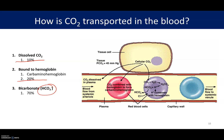Now here in this diagram we have a cell. We'll say this is a muscle cell and this muscle cell is forming CO2. So it's going to be forming it through the citric acid cycle. That CO2 has a couple of options on how to get transported and handled in the blood. All the CO2 is going to dissolve out — some of it will go out and just dissolve in the plasma.